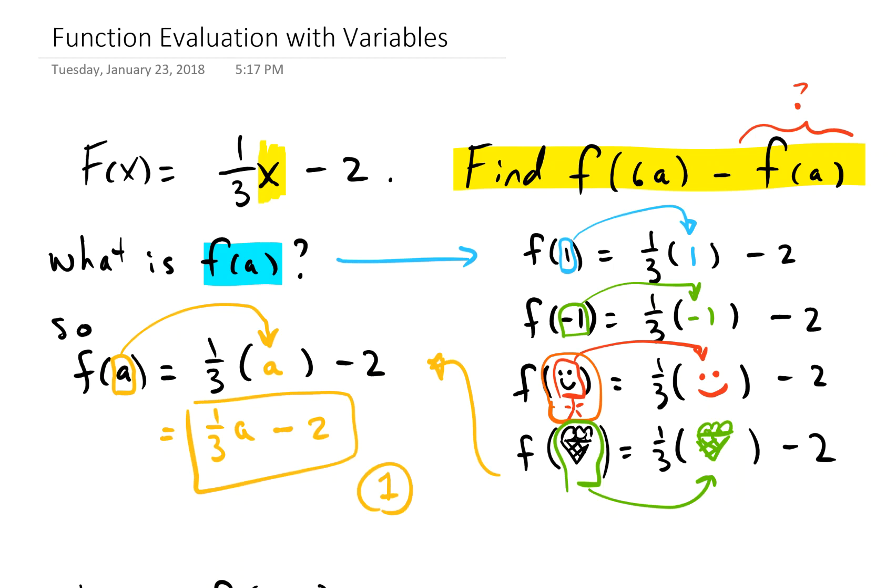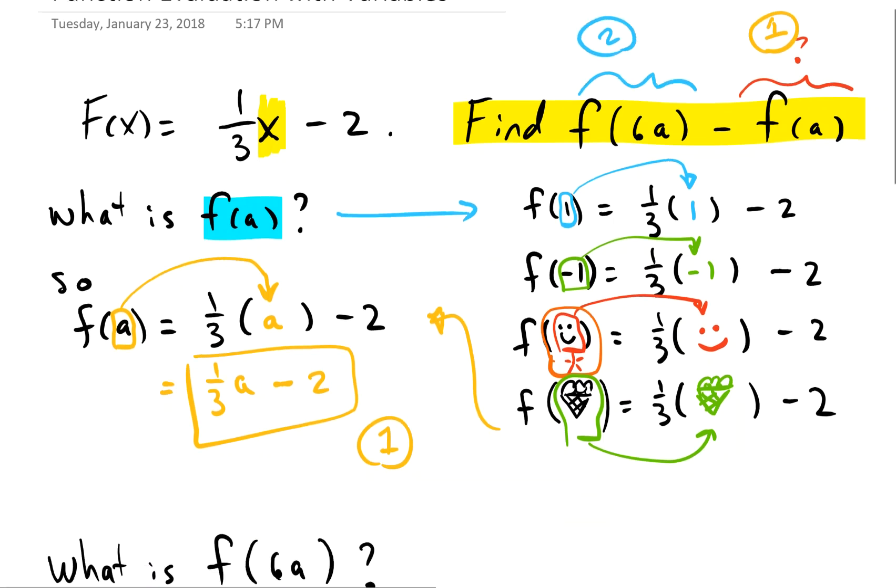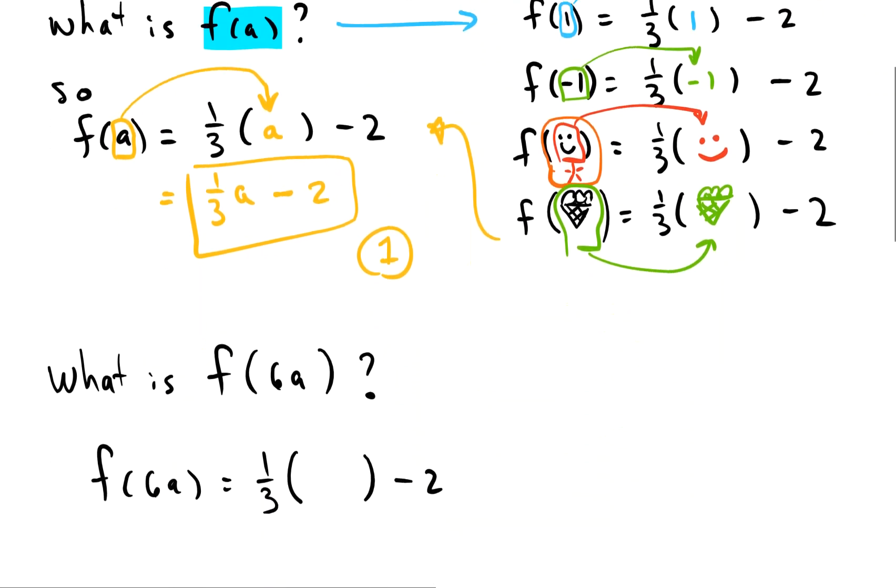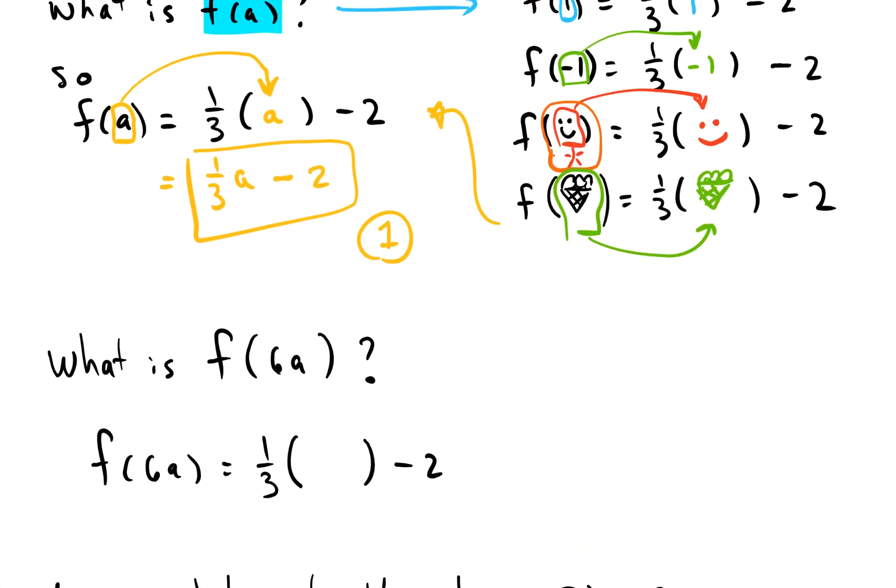So that's piece 1. So what about the second piece? We haven't looked at this—we'll call it piece 2. What is f of 6a? Well, if we follow the pattern we've seen so far, then all we're going to do is plug in the 6a wherever there was an x in the function f, and then we just do some simplification.